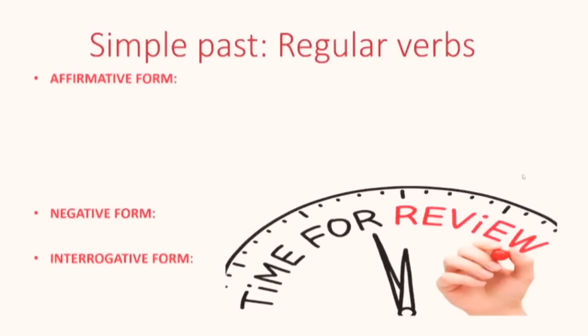So what do you remember about affirmative form? What kind of verbs did we have? We had regular verbs, but each one has a category. First category, all regular verbs, we add ed. Second, verbs ending in vowels plus y, we add ed, same rule.